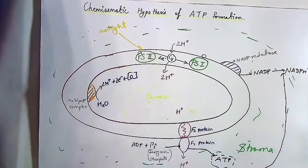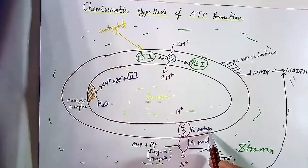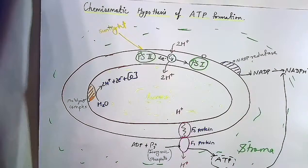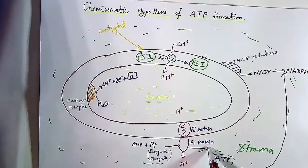This is PS2, this is PS1. This is F0 protein, also known as integral protein or intermediate protein, and this is F1 protein or ATPase.